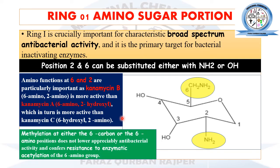If we cause methylation at the sixth carbon or the sixth amino position, it will not appreciably lower antibacterial activity, but it can create resistance to the enzymatic acylation of the six amino group.